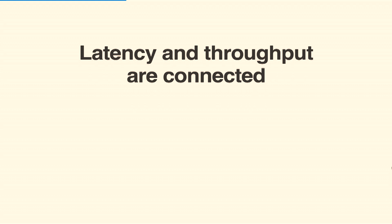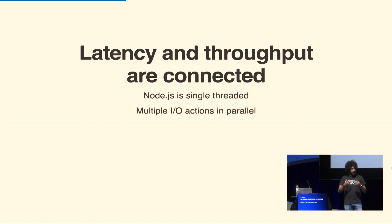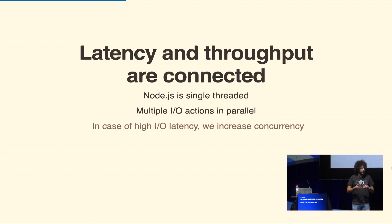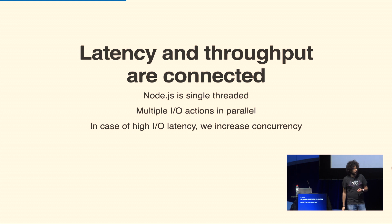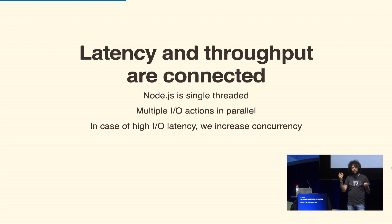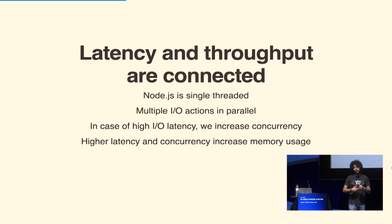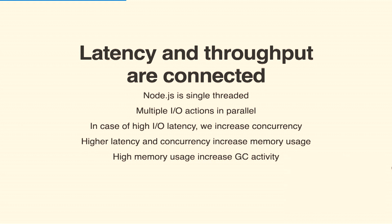When developing Node.js applications, you need to remember that latency and throughput are connected to each other, and because Node is single-threaded, multiple I/O actions run in parallel but only one JavaScript function can execute at a time. When multiple I/O operations are in parallel — like multiple database connections — you have increased concurrency. If the latency of those I/O actions gets higher, say due to a database problem, concurrency increases, memory usage spikes, and that increases garbage collection activity. Garbage collection then impacts your CPU cycles and the execution of your JavaScript functions — all interconnected by your process's limited resources.